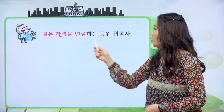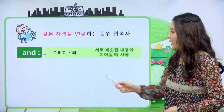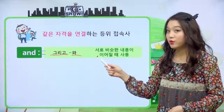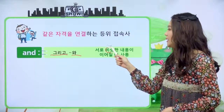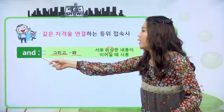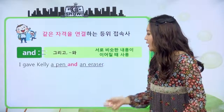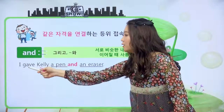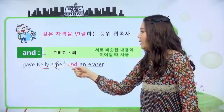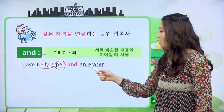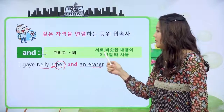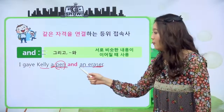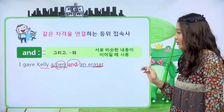첫 번째 같은 자격을 연결하는 등위 접속사예요. and 이건 해석이 어떻게 돼요? 그리고, 뭐뭐와, 이렇게 해석이 되죠. 서로 비슷한 내용이 이어질 때 and를 사용합니다. 예를 들면 I give Kelly a pen and an eraser. 나는 켈리에게 펜 하나와 지우개 한 개를 주었다. 비슷한 내용인 펜과 eraser가 이어질 때 and를 사용합니다.